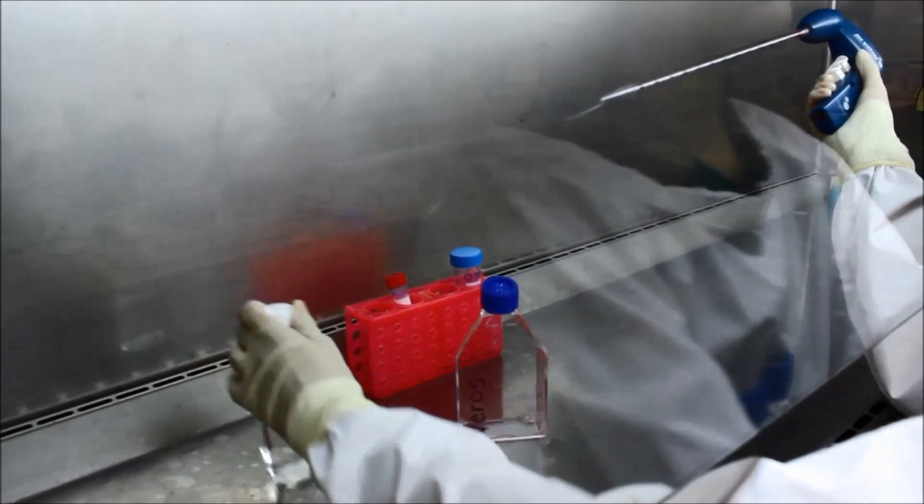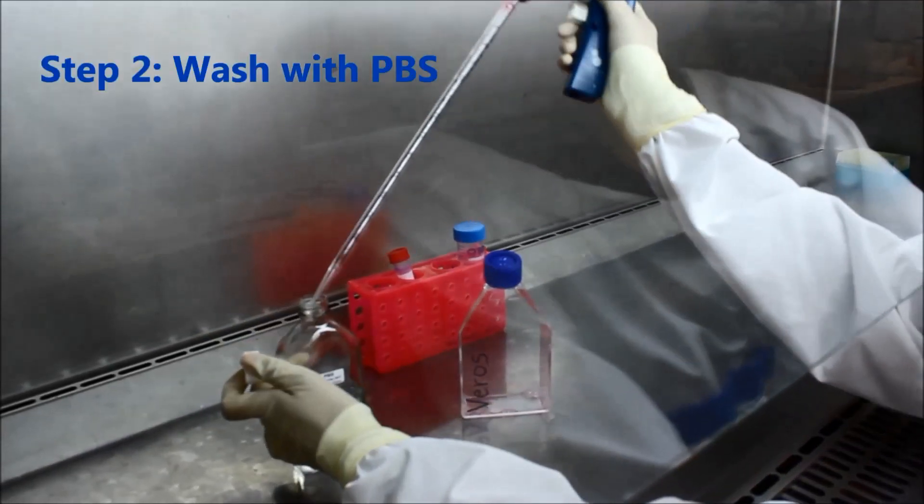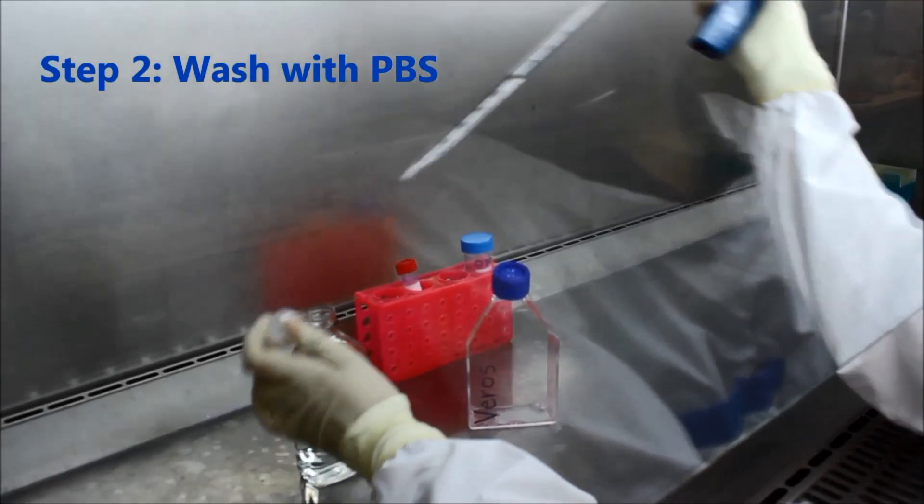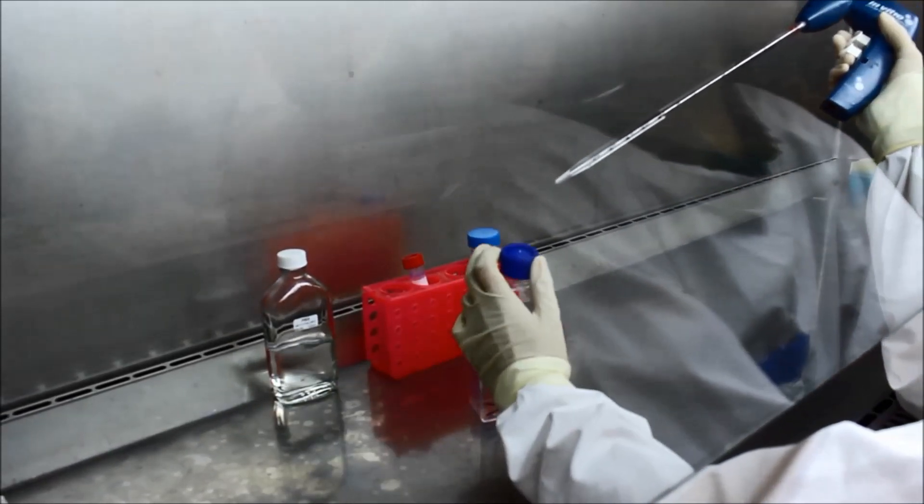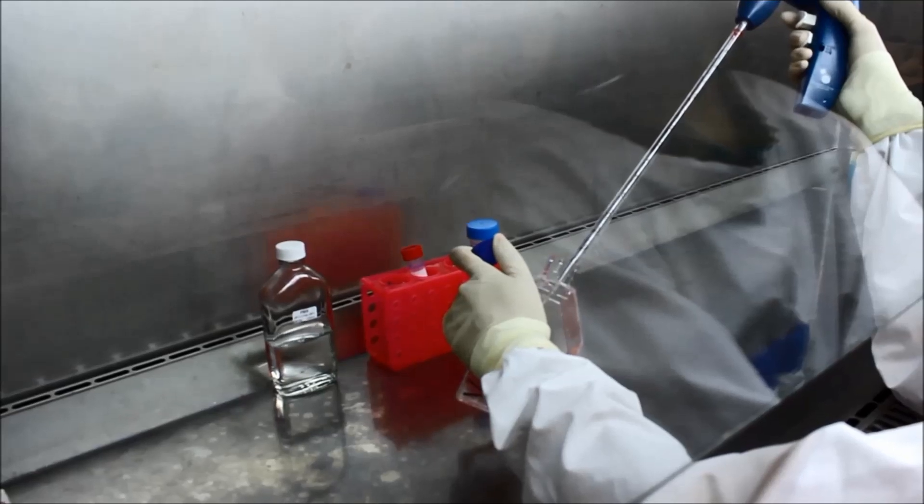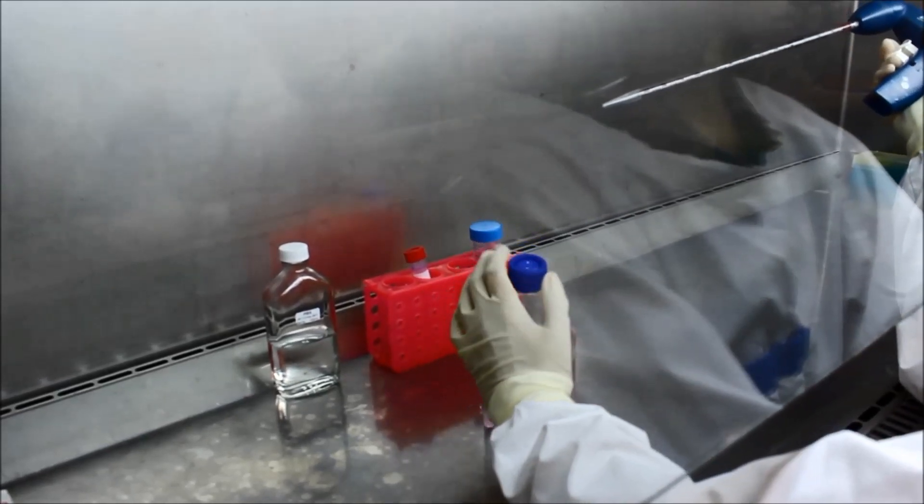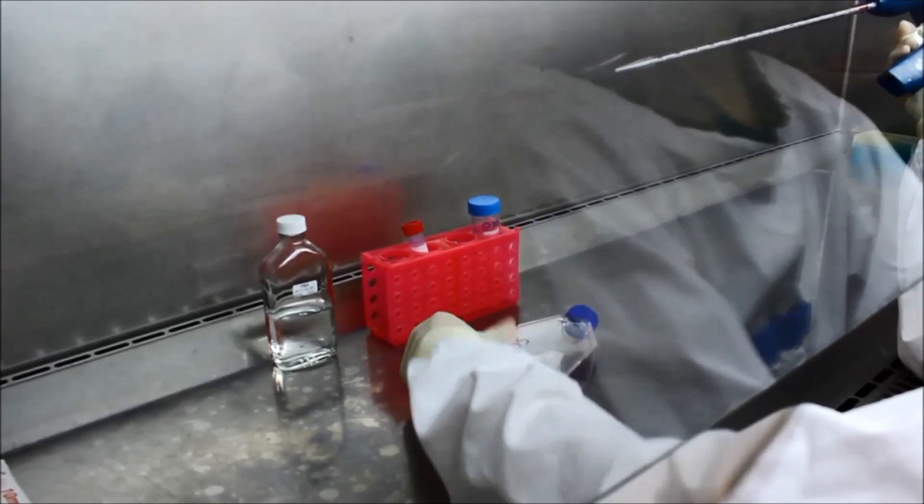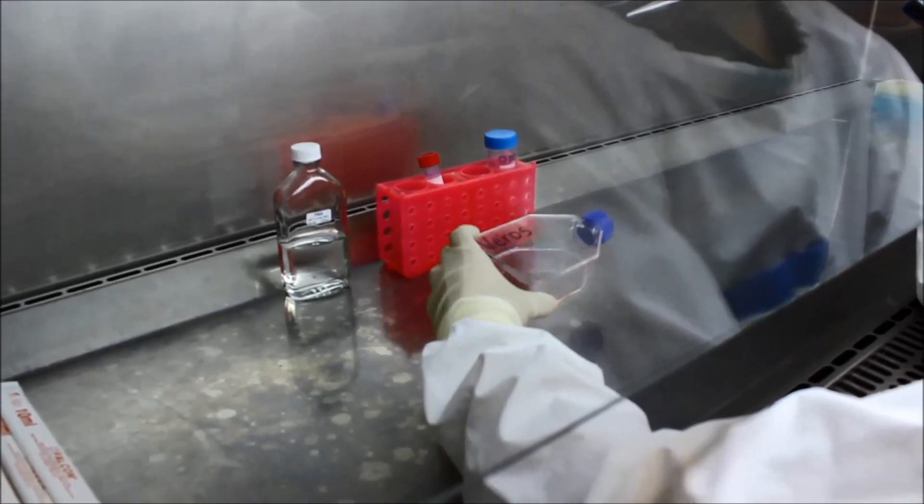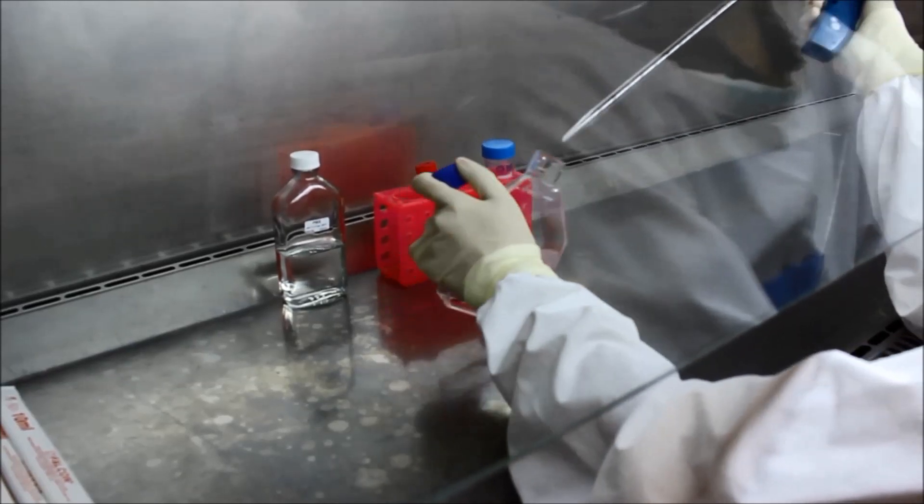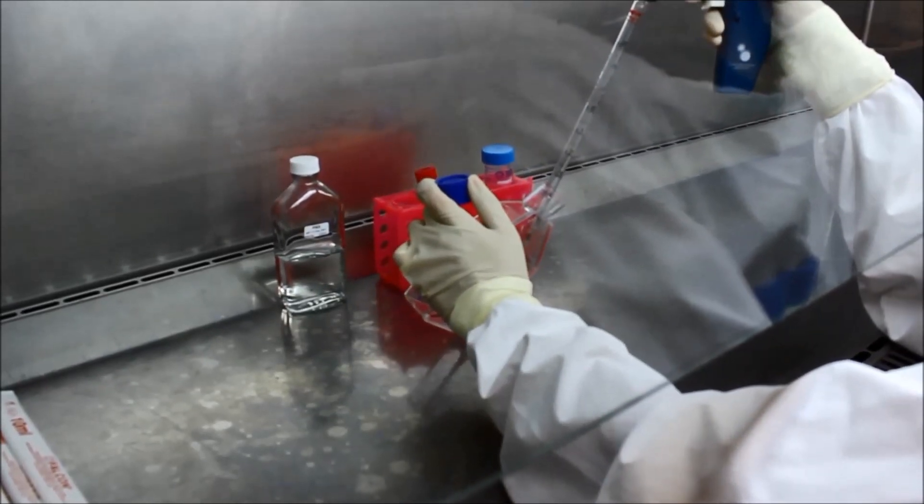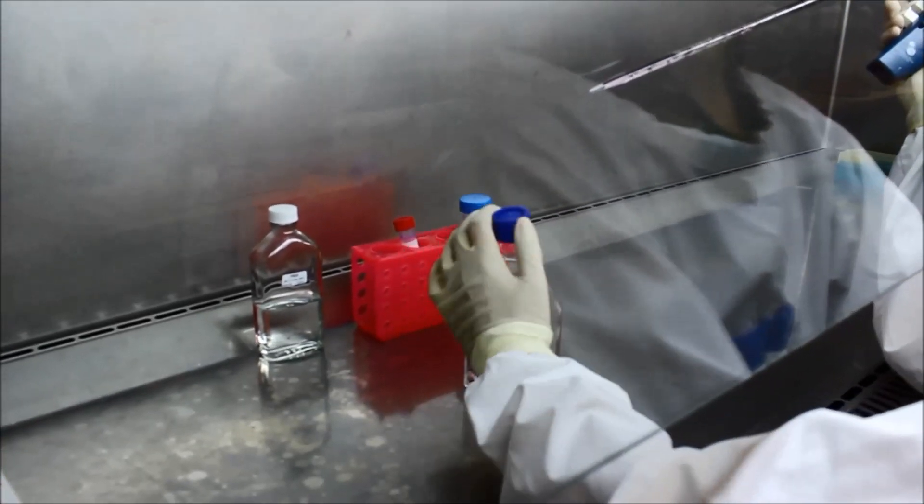Wash the cells by adding five mils of PBS to the flask and swirling on the base gently. Then remove the PBS and discard.